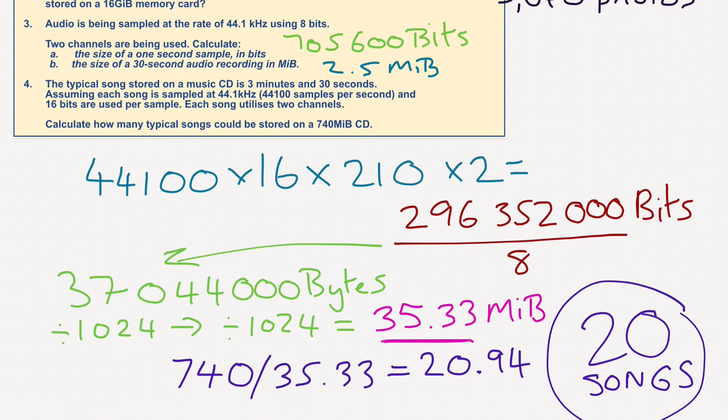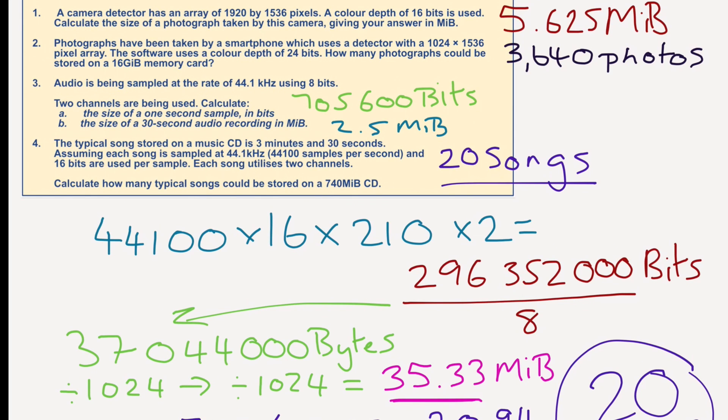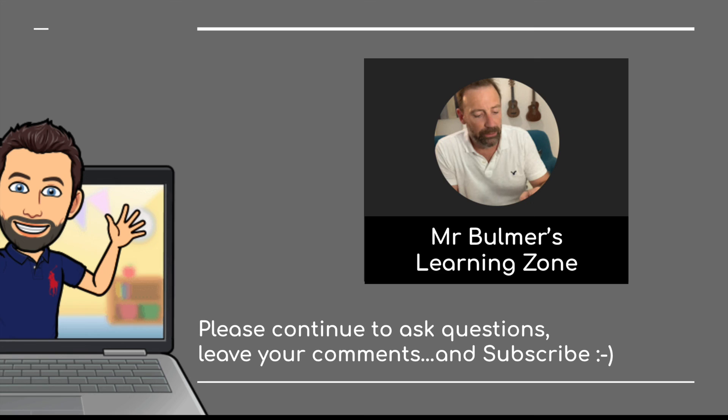We've taken all the elements of what we've learned previously to get the answer to this one. Quite complicated sums, but there are your answers. First one, second one, three, and four. That is it for all the questions on chapter one, data representation. Thank you very much indeed, and I'll see you for chapter two.